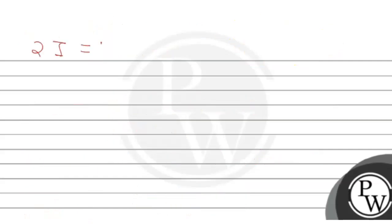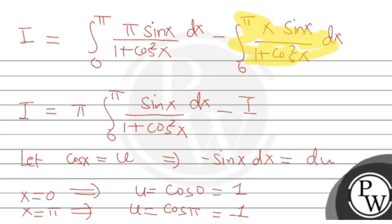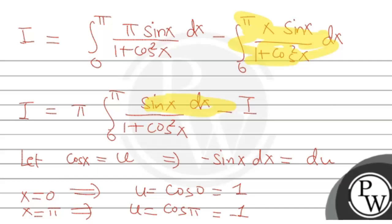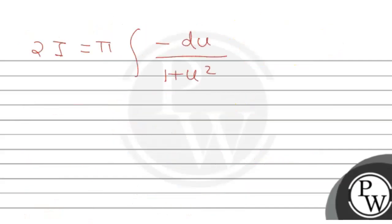So 2I equals π times the integral from 1 to −1 of (−du) upon (1 + u²). Reversing the limits removes the negative sign, giving us 2I equals π times the integral from −1 to 1 of du upon (1 + u²). The limits are: when t equals 1 the lower bound, and when t equals −1 the upper bound.